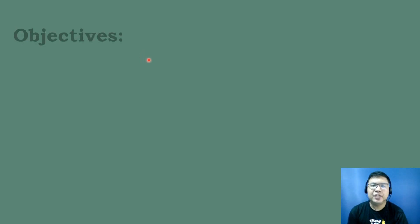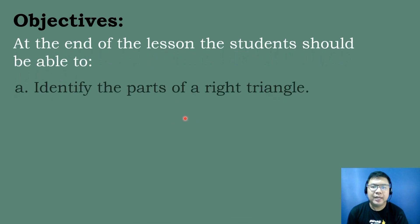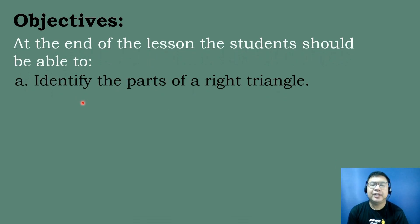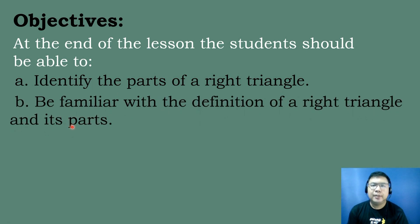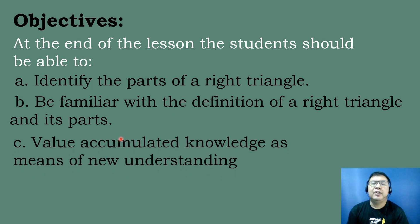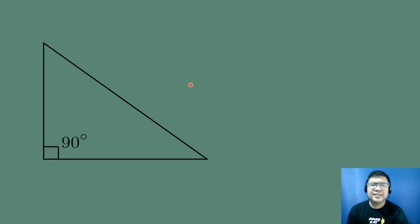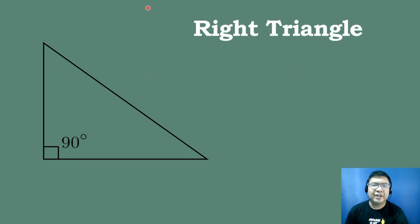Let's have the following objectives in today's topic. Letter A, identify the parts of a right triangle. Letter B, be familiar with the definition of a right triangle and its parts. And Letter C, value accumulated knowledge as a means of new understanding. So this given figure is an example of a right triangle.